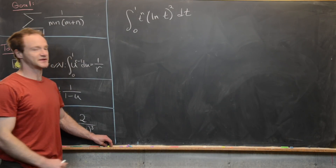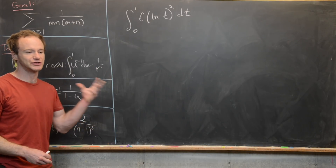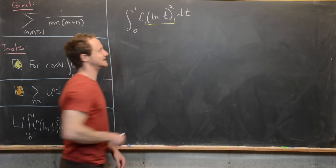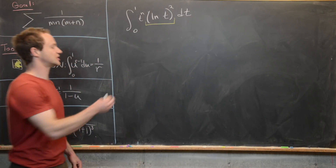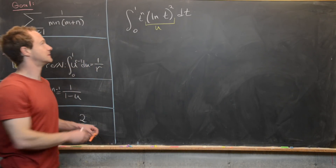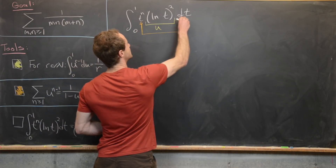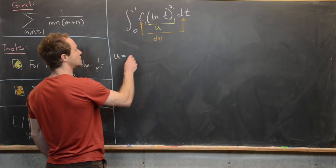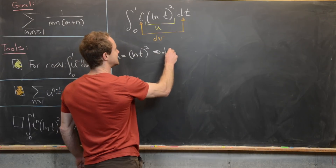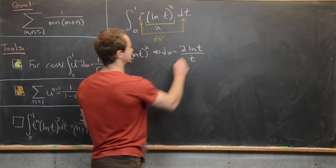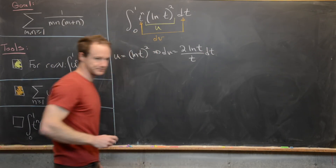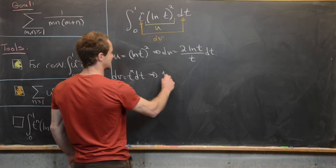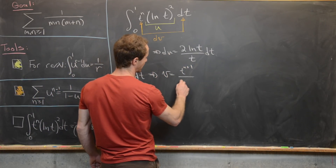We're going to use straightforward integration by parts. Since the integrand involves an inverse function, a good choice for u is that inverse function, meaning dv is everything left over. So we let u equal the natural log of t squared, giving du equal to 2 times the natural log of t over t dt by the chain rule. And dv equals t to the n dt, so v equals t to the n plus 1 over n plus 1.